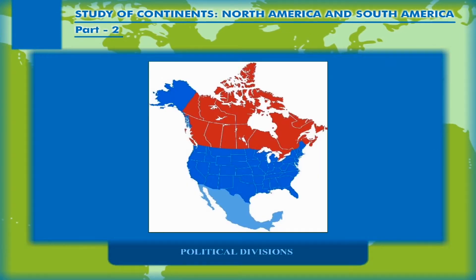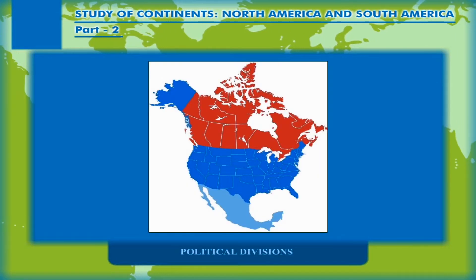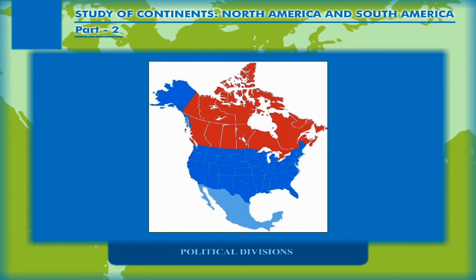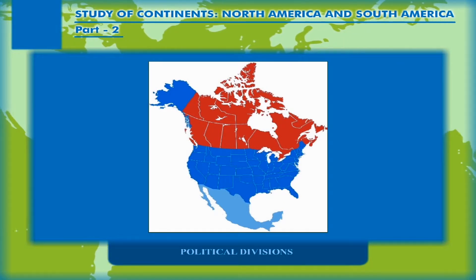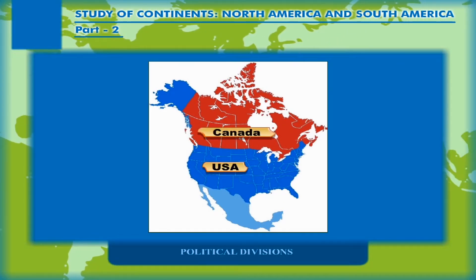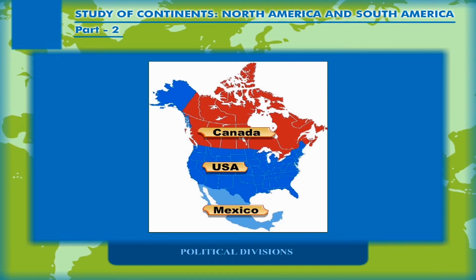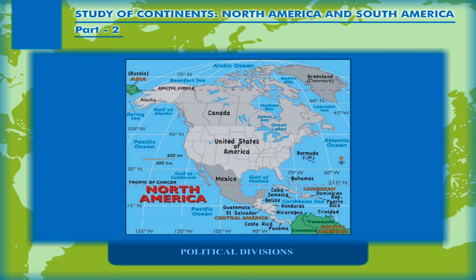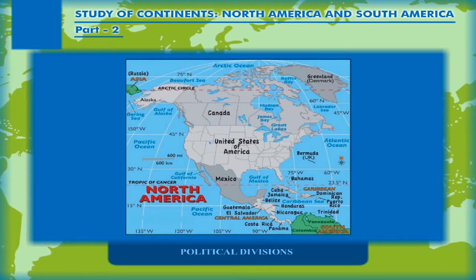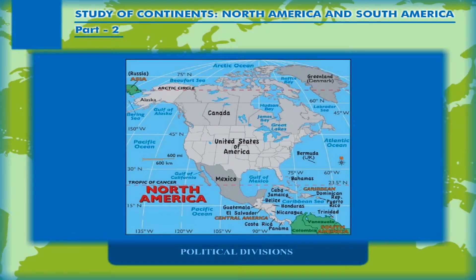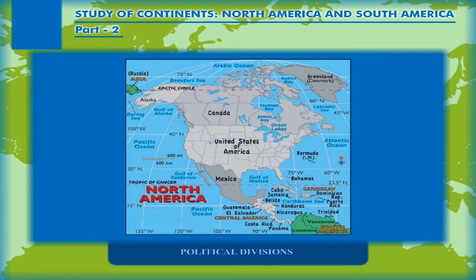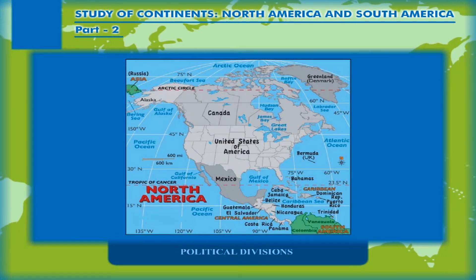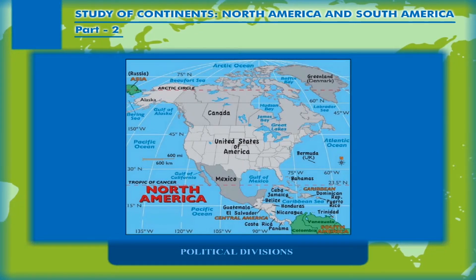Towards the south, North and South America are connected by the isthmus of Panama. North America has three large countries — Canada, USA, and Mexico — and many small countries in Central America. There are many islands in the Caribbean Sea which are independent countries.